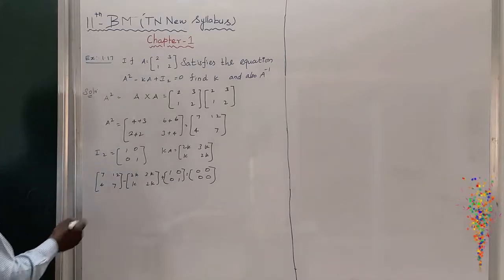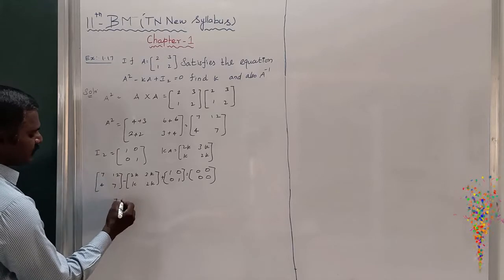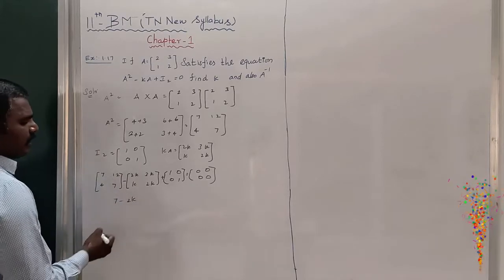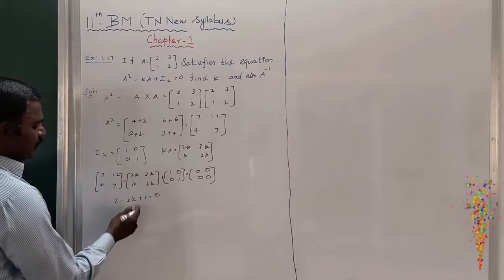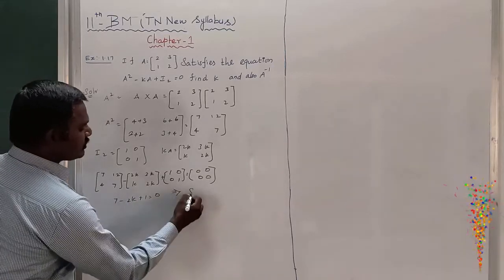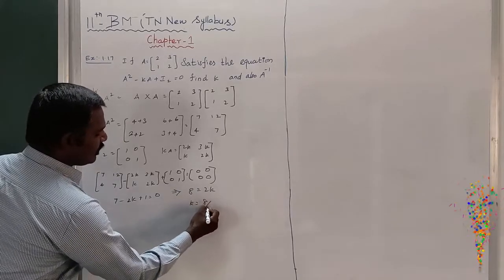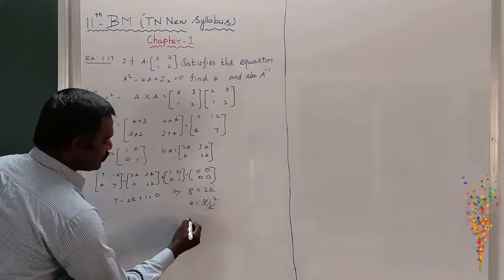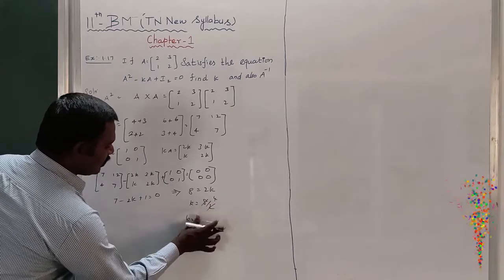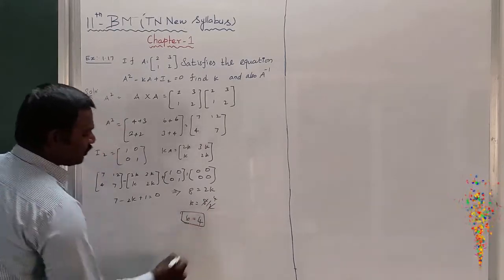I want to find out that K value. Let us take the first term, first row, first column: 7 - 2K + 1 = 0. Taking right hand side, 7 plus 1 is 8. This is equal to 2K. Where K = 8/2. 4 twos are 8. K = 4. This is the solution of K.